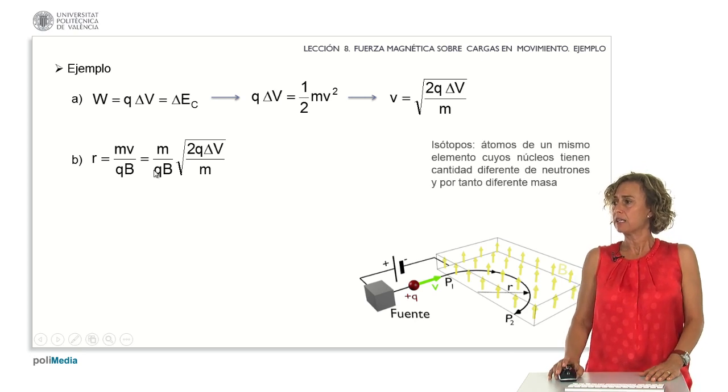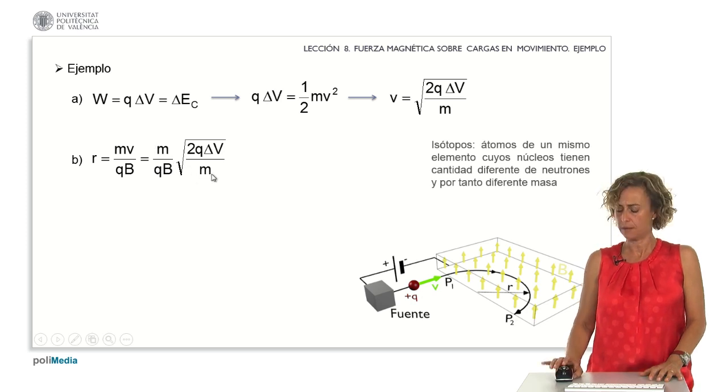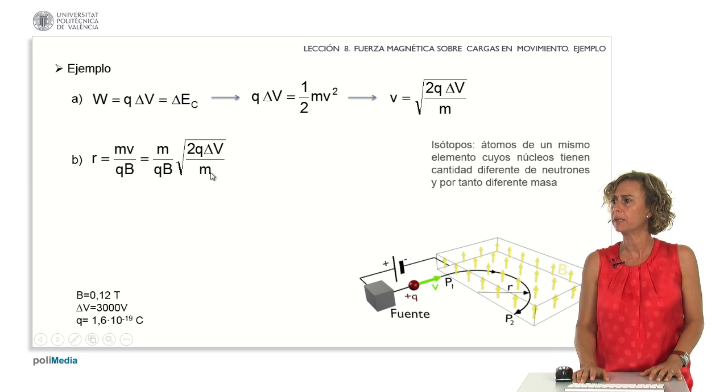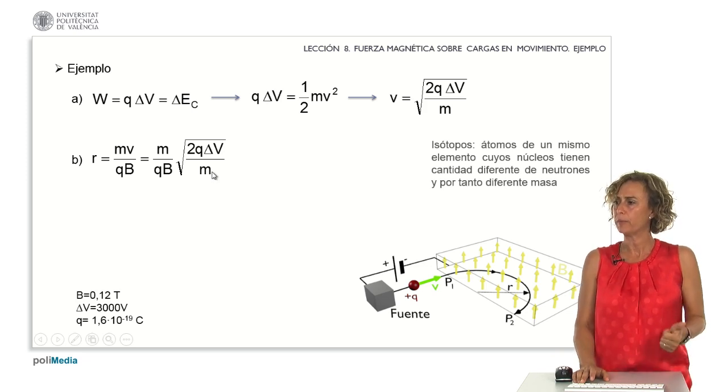The charge in the case of nickel 58 and nickel 60 is the same, and the only difference will be the mass. Remember, we were provided with the values for the magnetic field, the potential difference, and the charge.